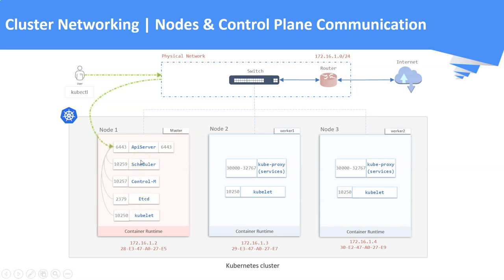None of the control plane components apart from the API server is designed to be exposed to the external world. There are two primary communication paths from the control plane to the worker nodes. First is the API server to the kubelet process. Second is from the API server to any node, pod, or service through the proxy service called kube-proxy. We have now seen how the control plane and nodes communicate with each other. In the upcoming slides, we are going to discuss how the Kubernetes objects communicate with each other.